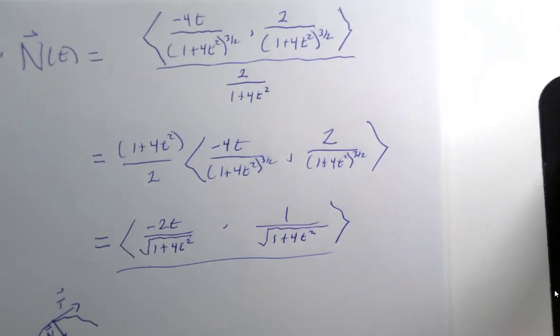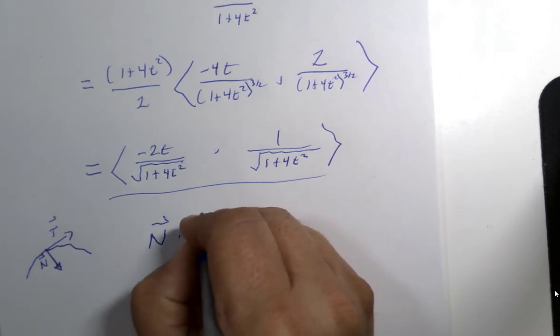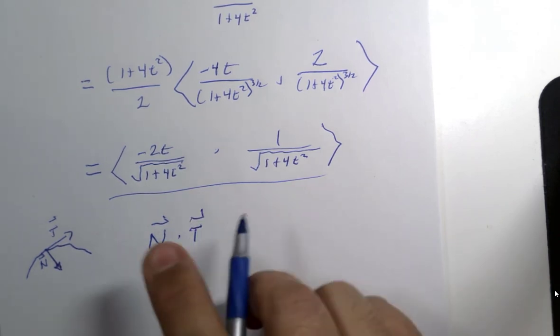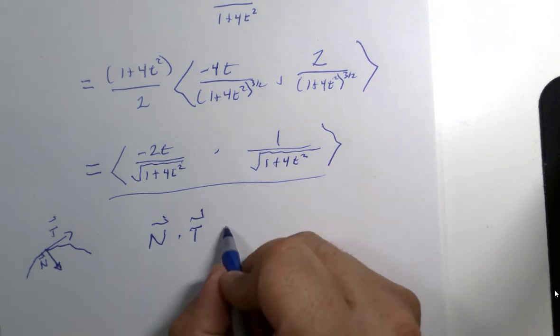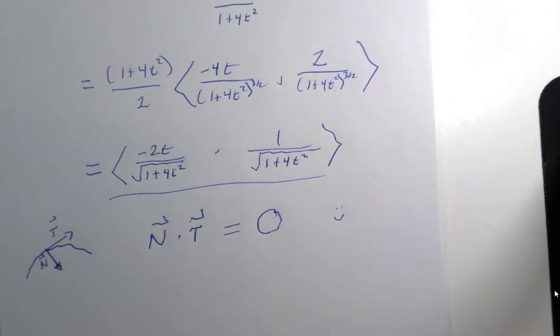And I promise you, if you take this N and you dot product with the original tangent vector from the beginning of the video, you will get zero. And you should check that. You don't need me to do it. Now, if this is the easiest curve possible, I don't really want to have to repeat this calculation many times. So stay tuned to future segments and we'll look at a way to sort of sneak up on the principal unit normal vector. Until next time.